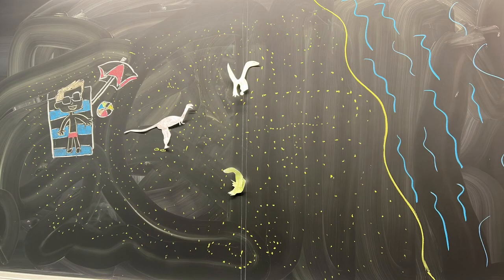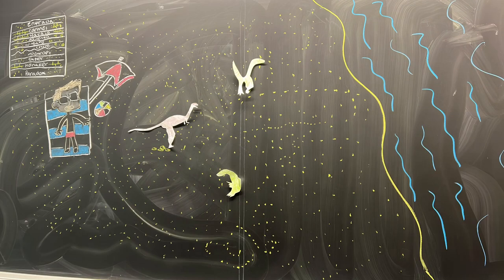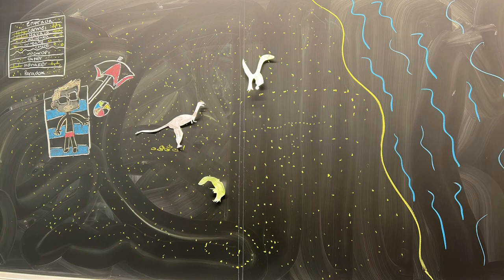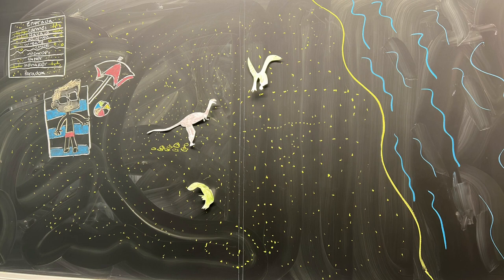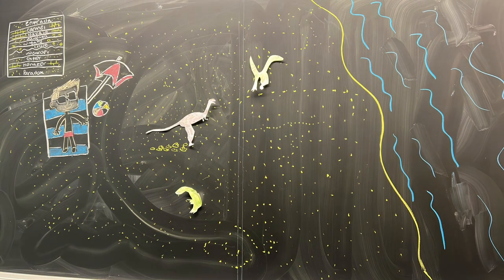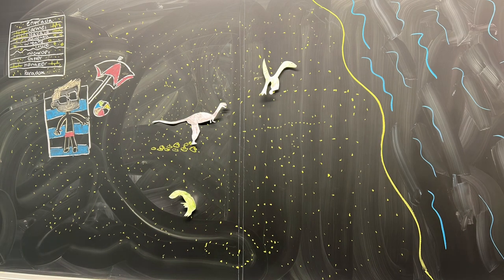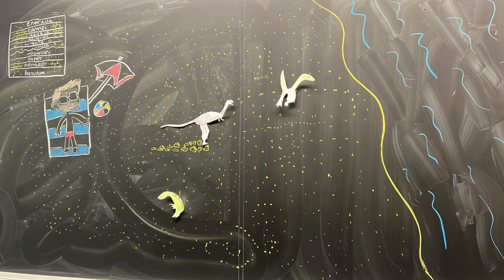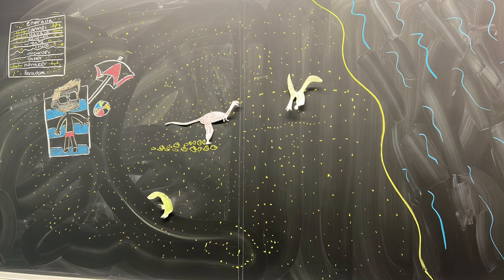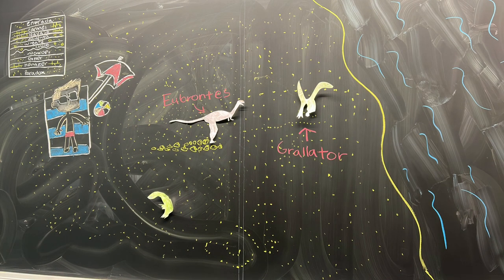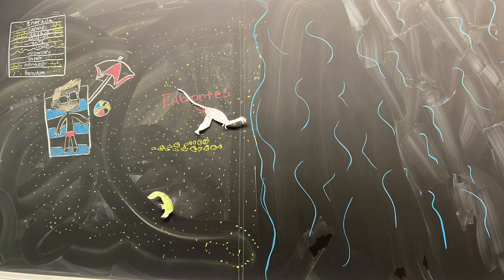During the middle Jurassic period, with the creation of the western interior seaway comes a major shift in the environment, shown in the Carmelin and Trata Formations. Here we get fluctuating sea and sand environments, which brings new dinosaurs like the Eubrantes and others.